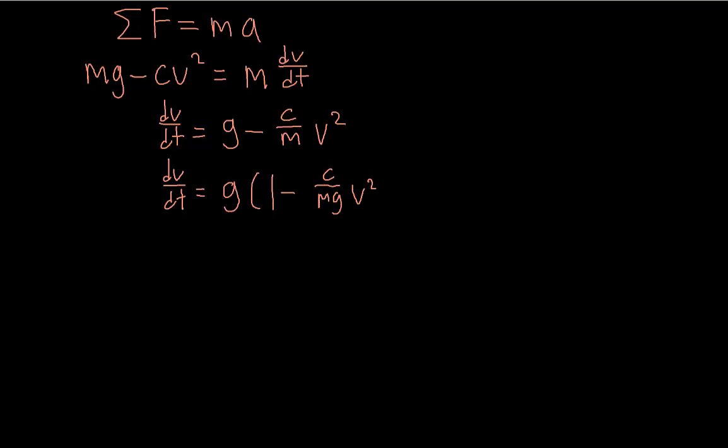And so if you look at c over mg, well, it turns out that that's just the reciprocal of the terminal velocity squared. So we're going to rewrite that as v squared over vt squared.